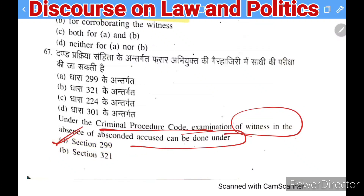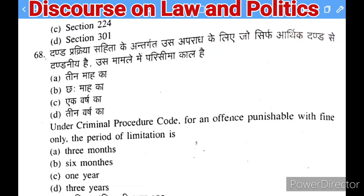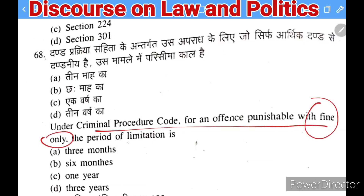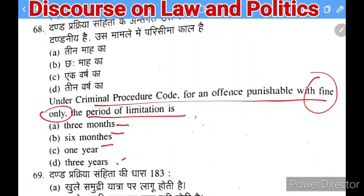Next question under CrPC: for an offense punishable with fine only, the period of limitation is — three months, six months, one year, or three years. The right answer is six months.